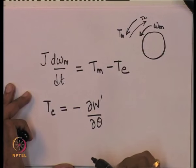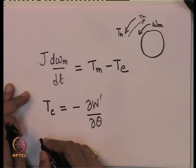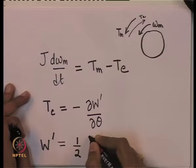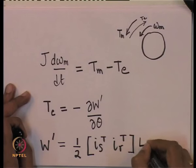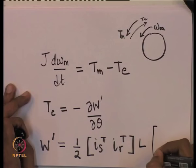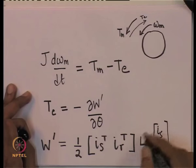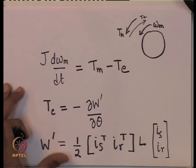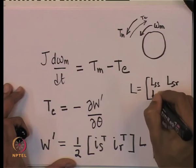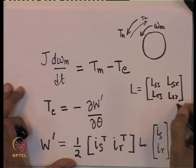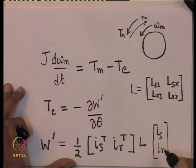The electromagnetic torque by basic electromagnetic energy conversion tells you that the torque is given by the partial derivative of the co-energy with respect to theta. Remember theta is measured in the anti-clockwise direction. The co-energy is a function of the currents, so when taking the partial derivative, the currents are kept constant. The co-energy is defined as half of [i_s^T, i_r^T] times the inductance matrix times [i_s; i_r].